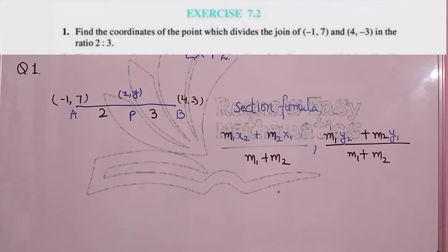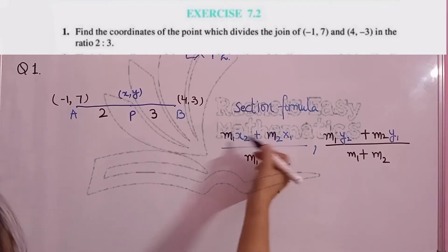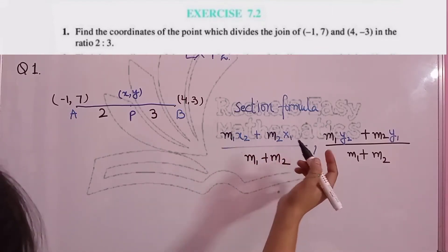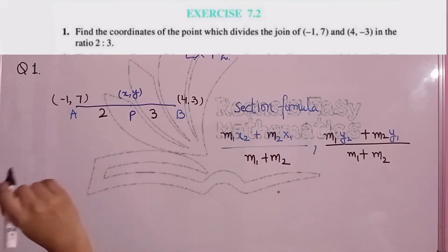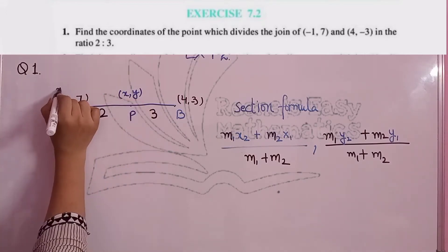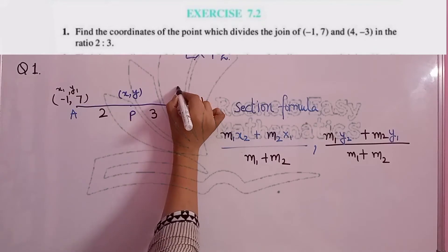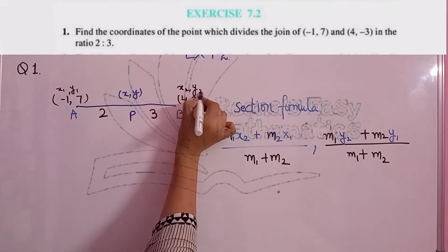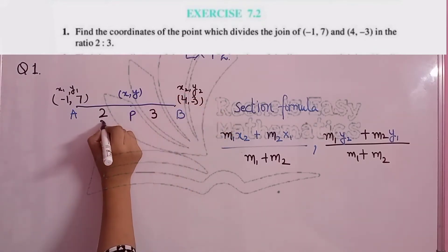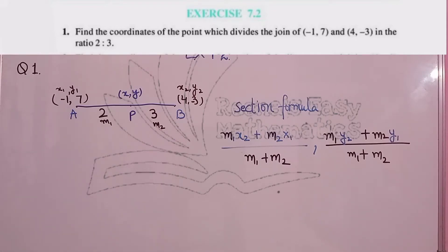The mistake to avoid is putting M1 where M2 should go, M2 where M1 should go, X2 where X1 should be, and so on. To avoid such mistakes, let's label clearly: this is my X1 and Y1, this is my X2 and Y2, this is M1 and this is M2. Writing it this way reduces the chances of silly mistakes.